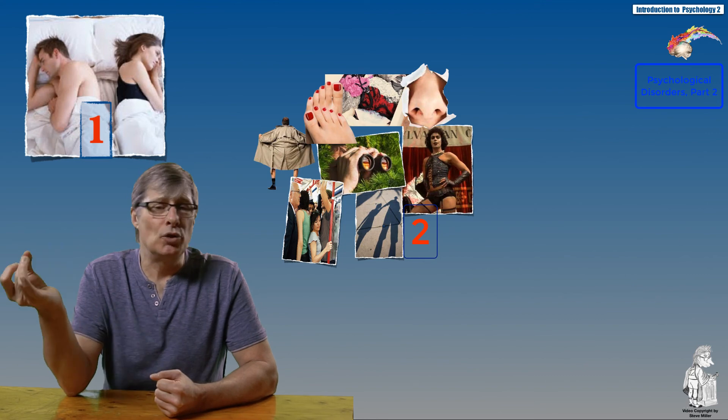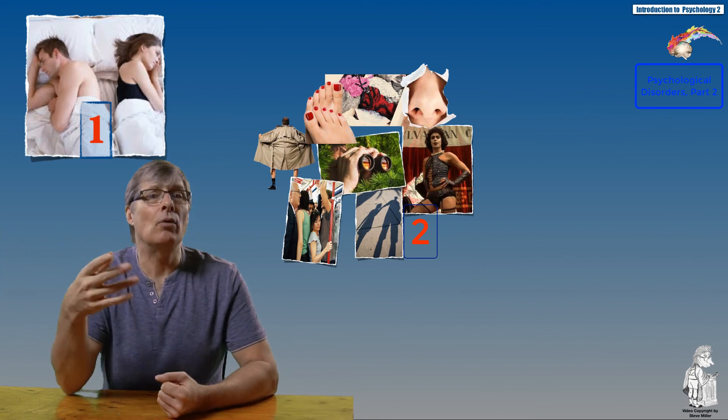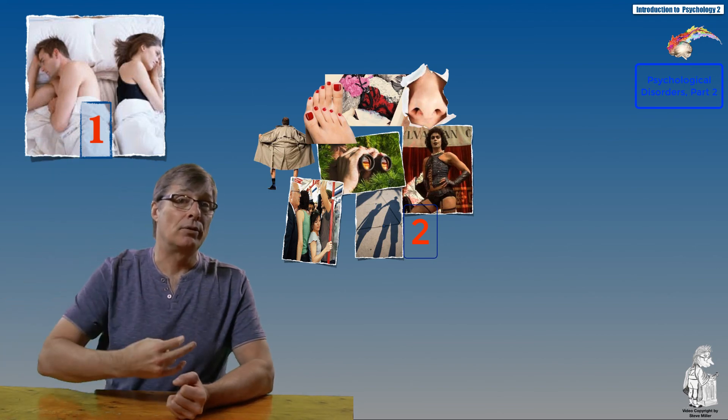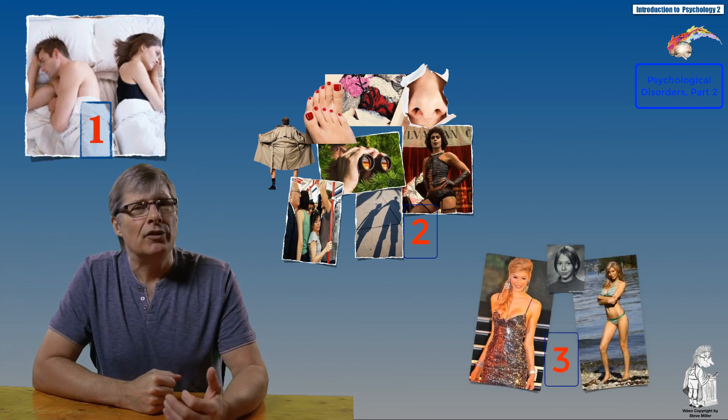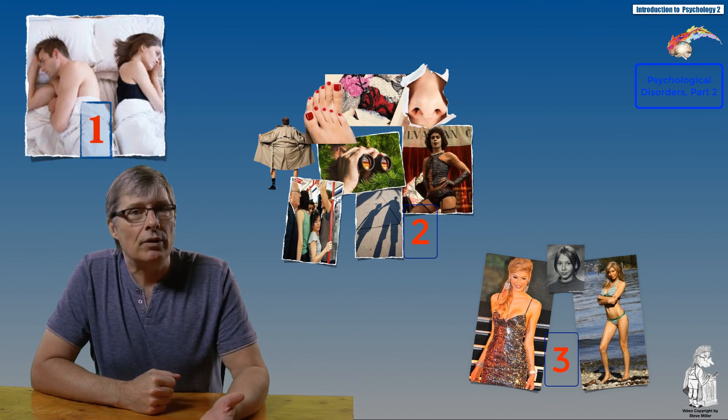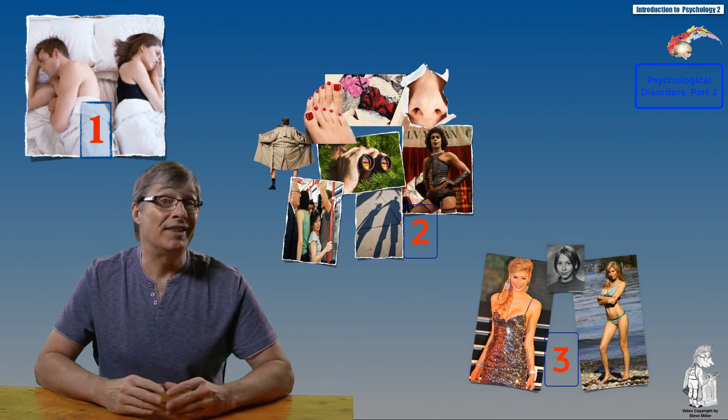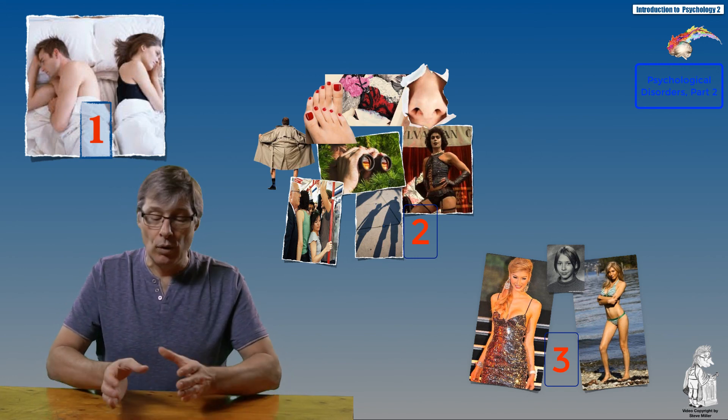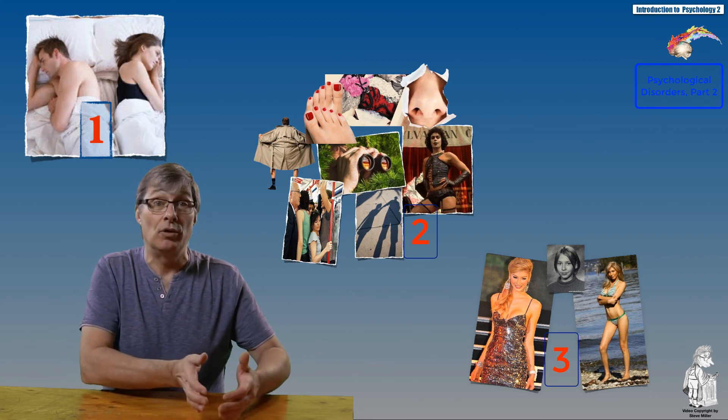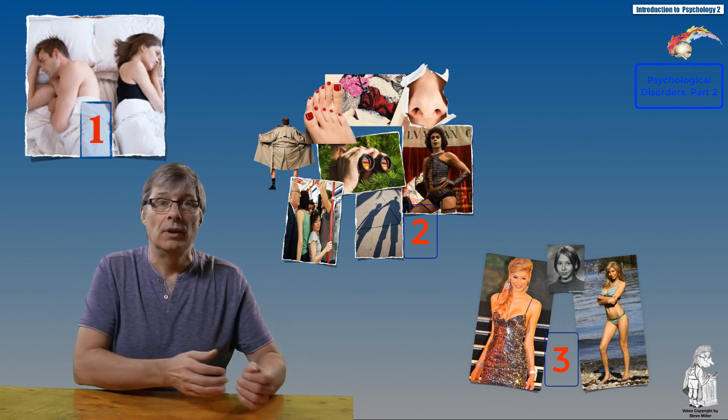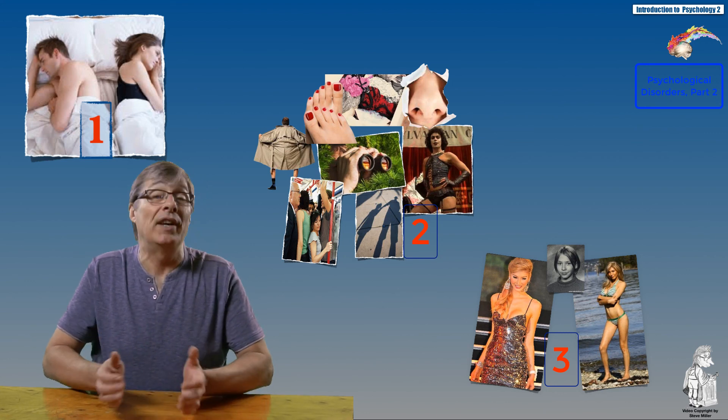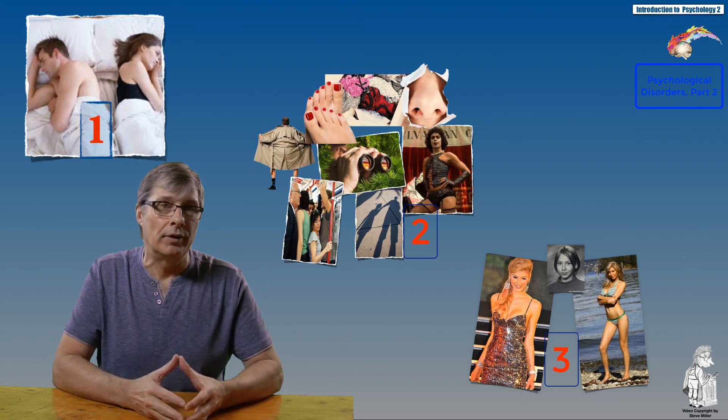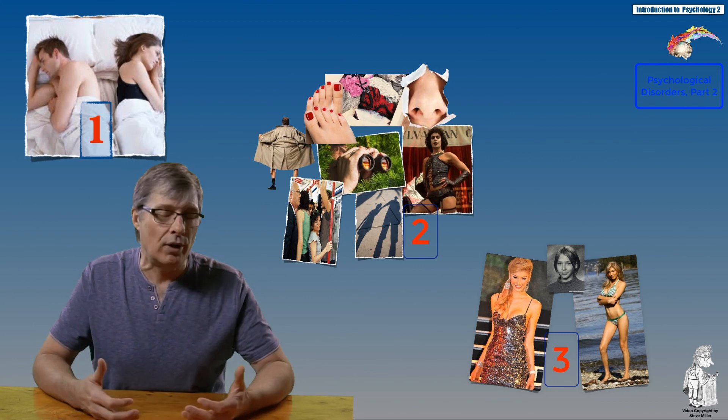The third group is gender dysphoria. Gender dysphoria involves difficulty of a person accepting one's identity as male or female. Not all people with gender dysphoria will go through transitions and become transsexual. Some people with gender dysphoria choose to remain in the same gender but might dress differently or at least live their life differently. It's just a quick overview.